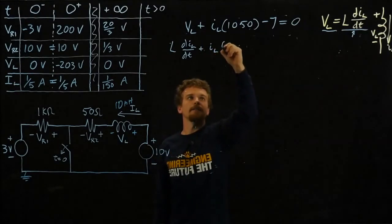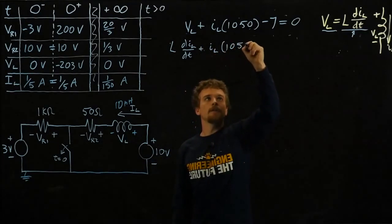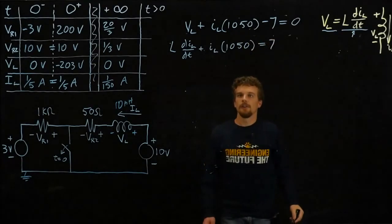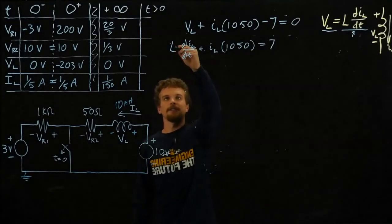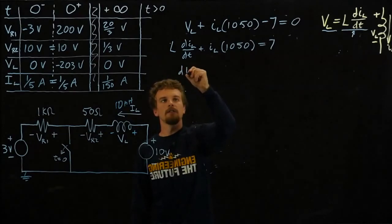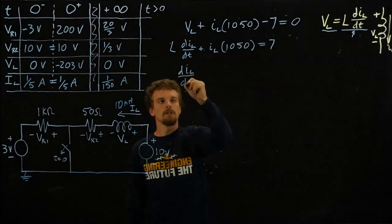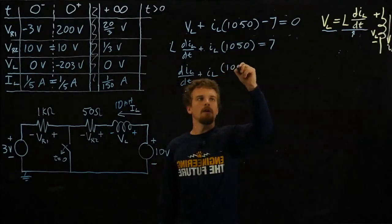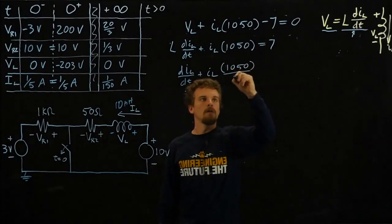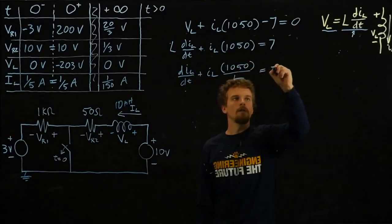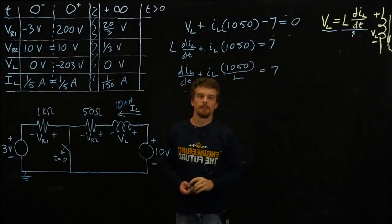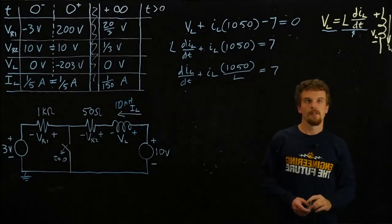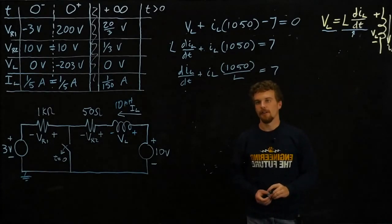We'll get L times the derivative of this current, plus that current times some resistance, all equal to 7. Let's pull this L down.